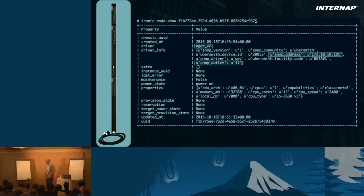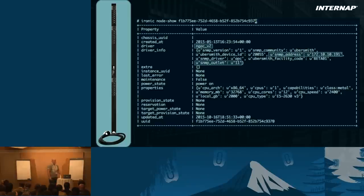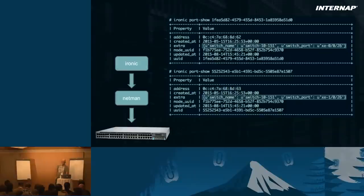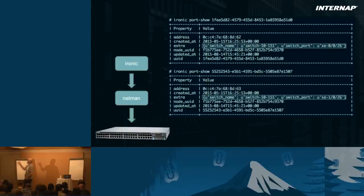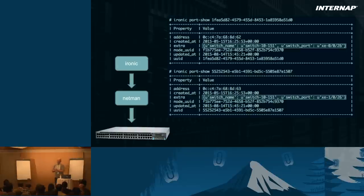This is the Ironic node show. We're using the NGAC driver, which we developed. The node knows about the PDU and the outlet. With this driver, we can do Ironic node set-power-state on and off, powering the server on and off from the Internap network. Regarding network information, Ironic port-show on the ports inside this node shows switch information and ports. Ironic doesn't interface the networking equipment directly — that would be too much for Ironic. We rely on Netman, which abstracts all network configuration. Ironic simply asks Netman to move a server to the provisioning VLAN, and Netman does the job.